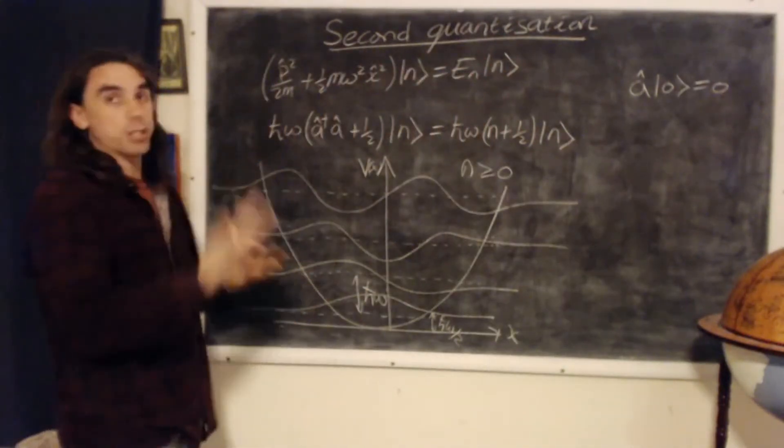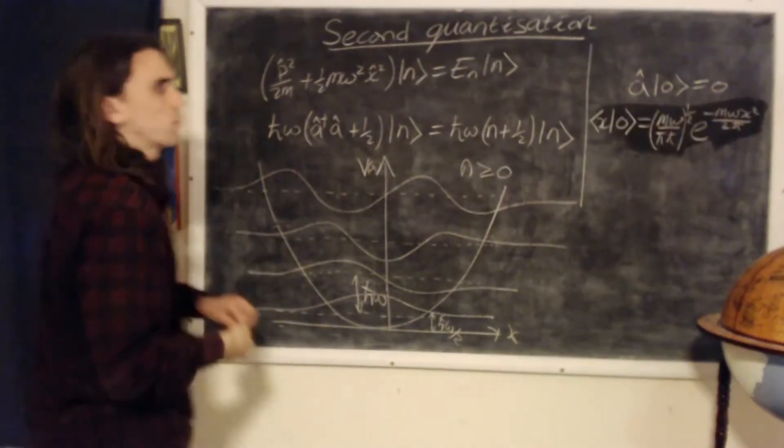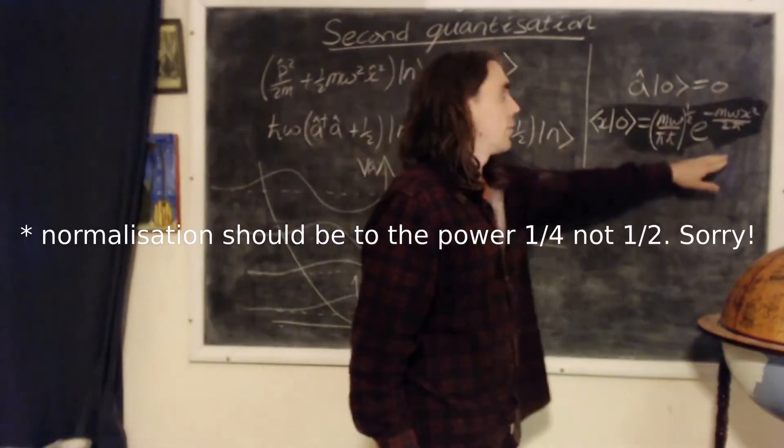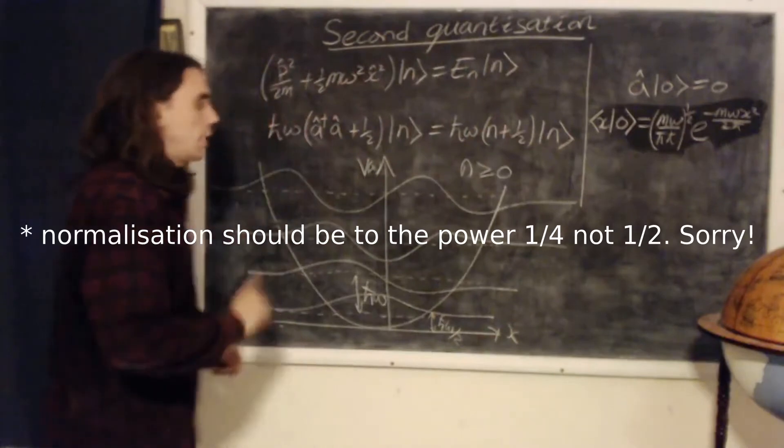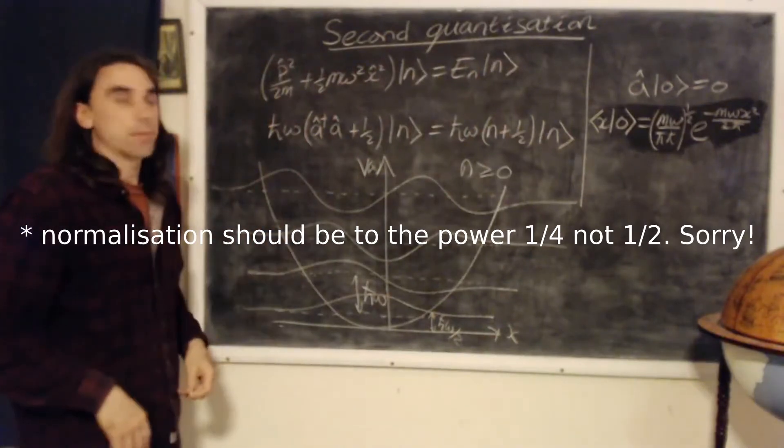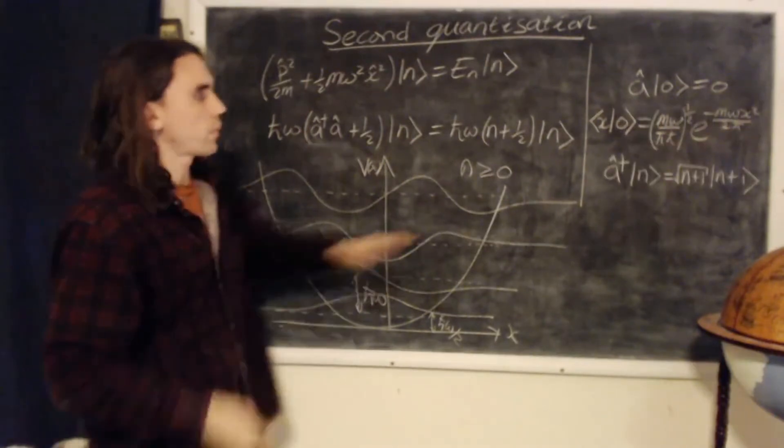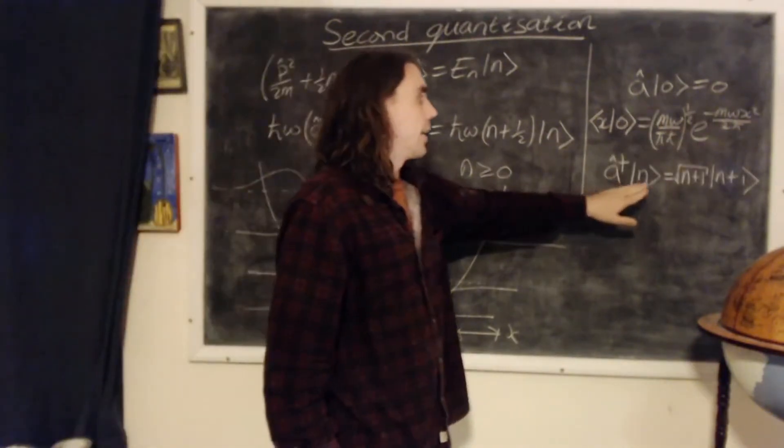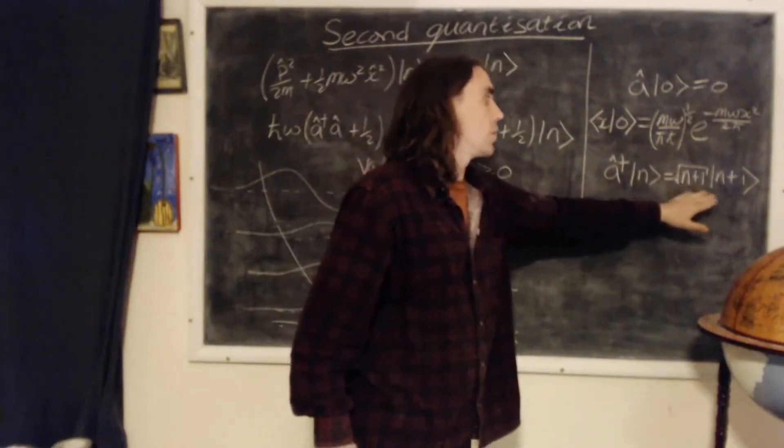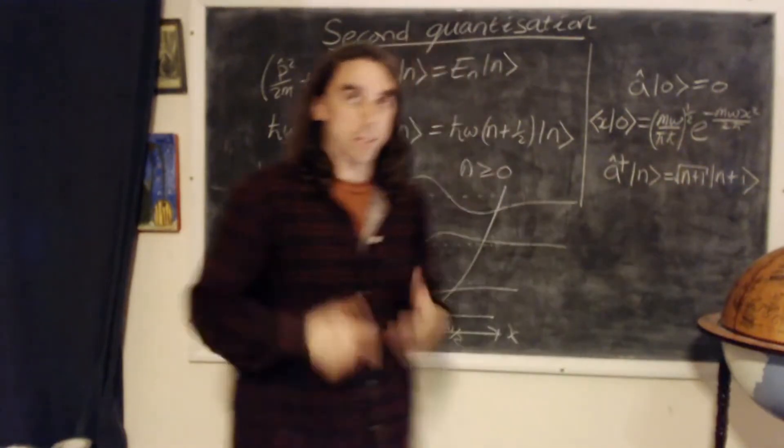we can deduce in the position basis we have this expression, a Gaussian form. And all higher energy eigenstates can be found using the raising operator on that state. So a dagger acting on the state n gives square root n plus 1 acting on the state n plus 1, and that's properly normalized.